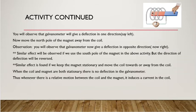Coming to the next slide, what you will observe from this experiment is that the galvanometer will give a deflection in a specified direction. If we move the north pole of the magnet away from the coil, we will observe that the galvanometer will give a deflection in the opposite direction.